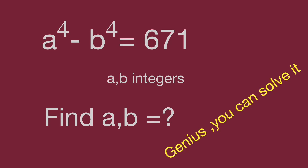Hello, you are watching Barahibo Math Genius Readdle. This is a challenging question. We have A to the power of 4 minus B to the power of 4 equal to 671, where A and B are integers. Find the value of A and B. Can you find the value of A and B? Pause the video and give yourself a try. When you are ready, keep watching the video to find the result.